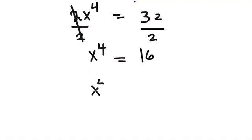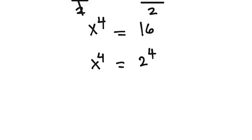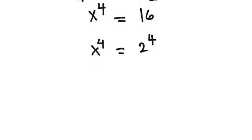So x to the power of 4 equals 16. Now 16 can be written as 2 to the power of 4. Don't make the mistake of cancelling the powers just because they are the same. This is an equation of degree 4, so we have four possible solutions.